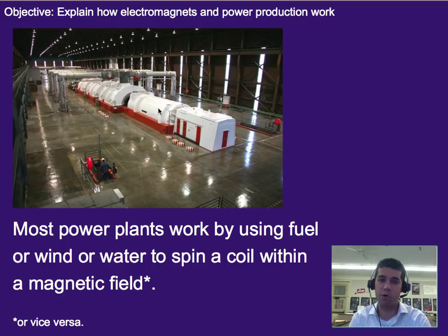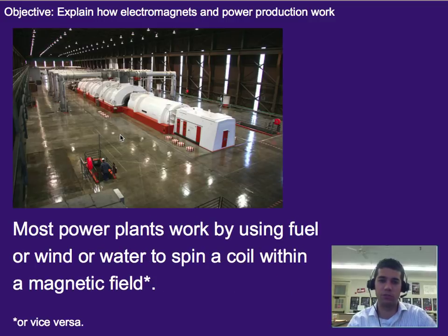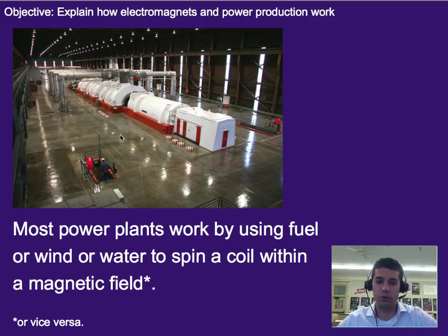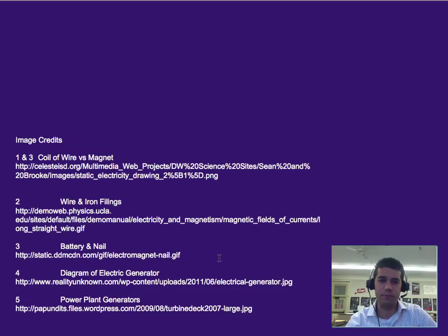That brings me to how most power plants work — they do that last method, which is usually moving a coil of wire through a magnetic field. They do so in large turbines like this, using fuel, wind, water, or something to spin a coil of wire within a magnetic field. They can do it the other way around, and some do, but moving the coil is more common. Three or more bullet points worth of notes, a one to two sentence summary, and your follow-up questions on Google Forms.